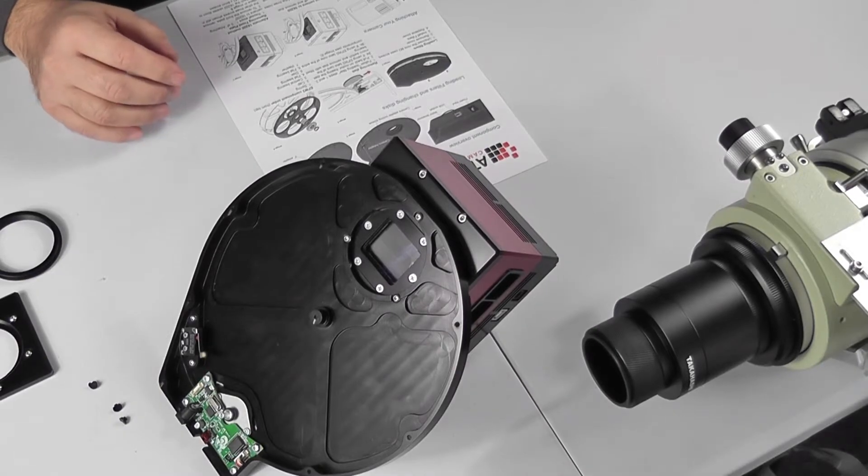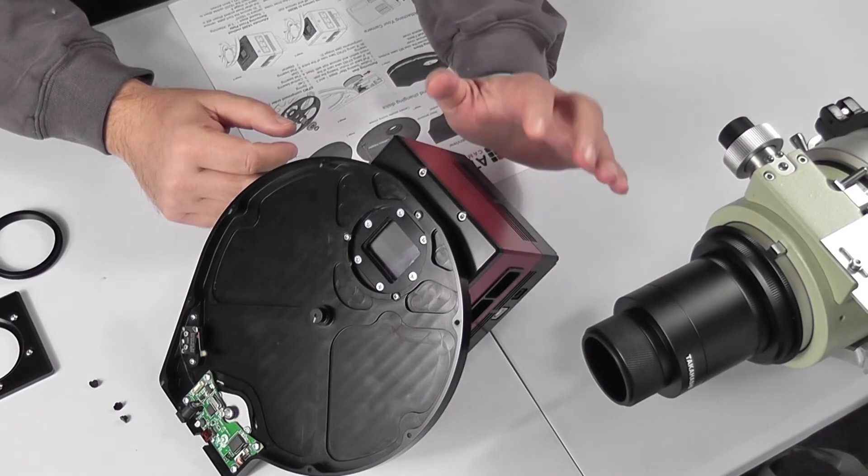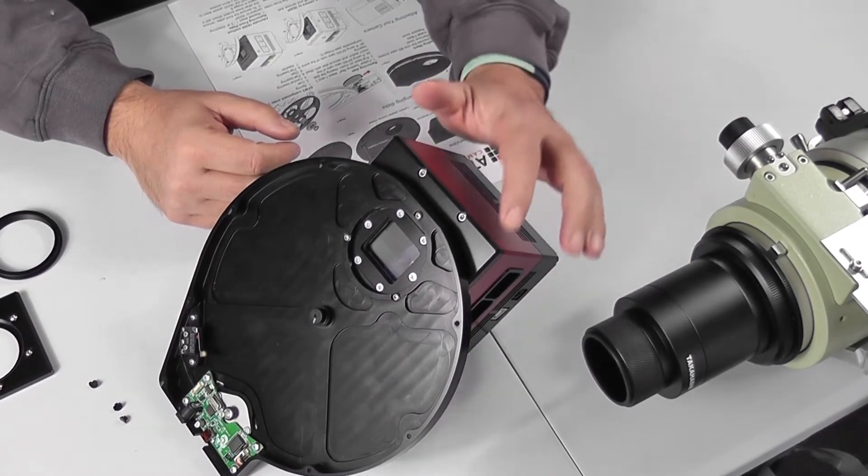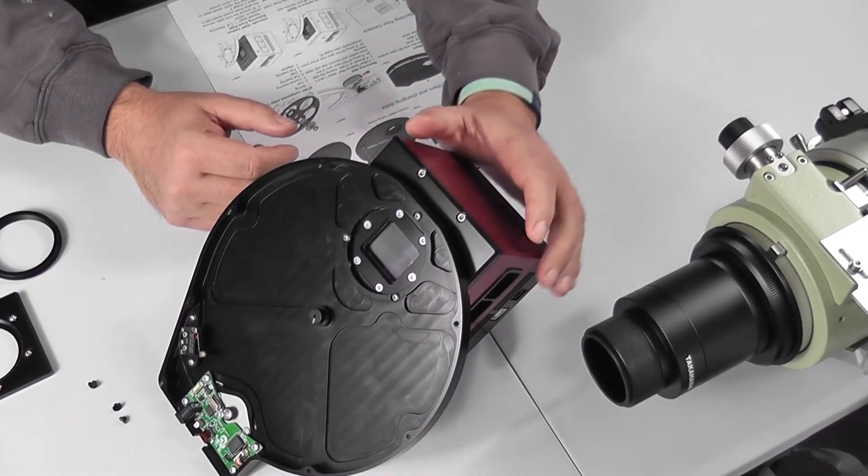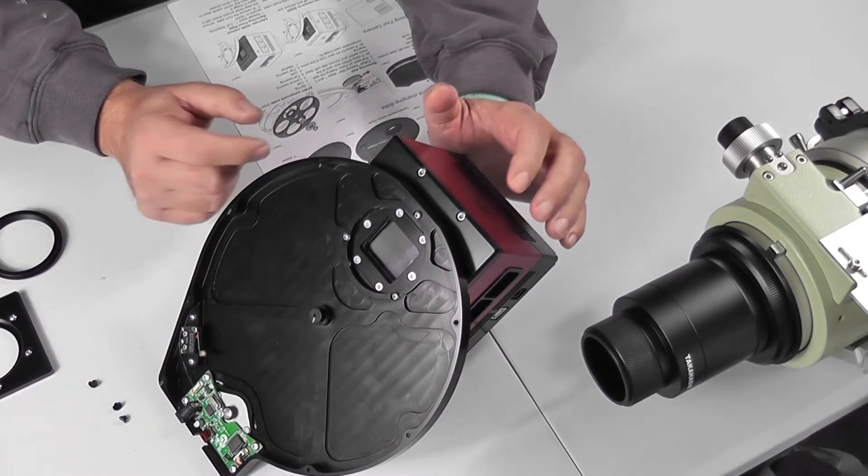Hello and welcome to another one of my videos relating to the Attic EFW3 filter wheel. Today we're going to be talking about connecting the Attic 16200 CCD camera directly to the filter wheel.